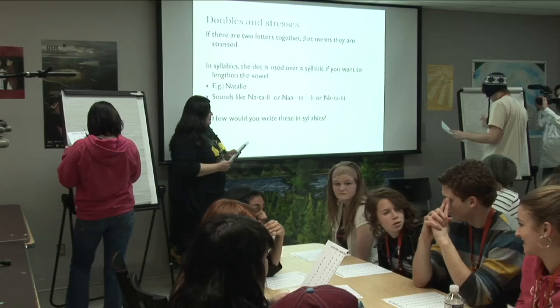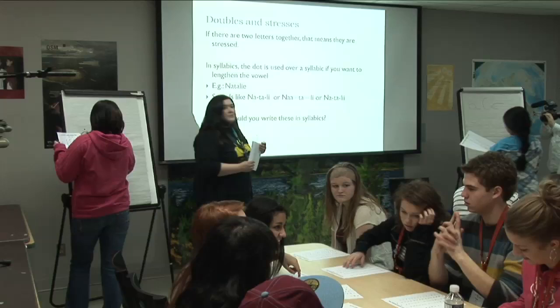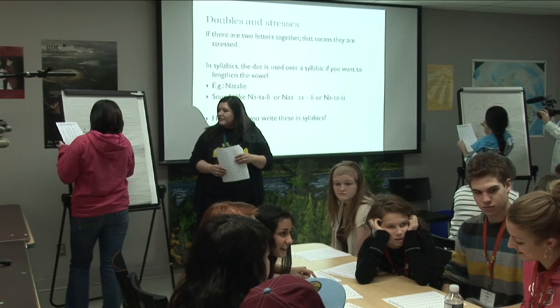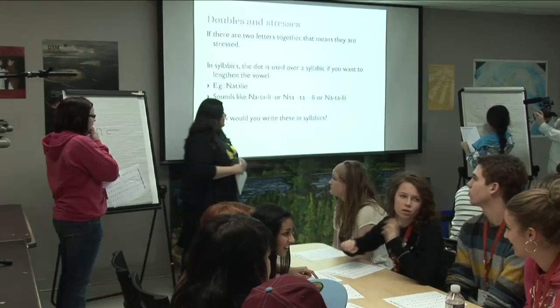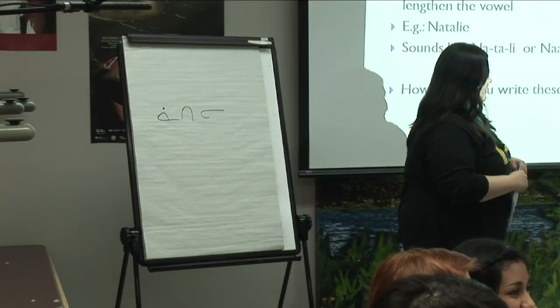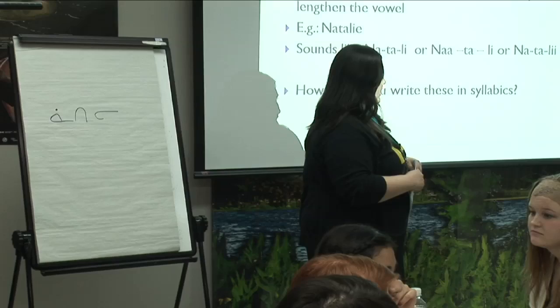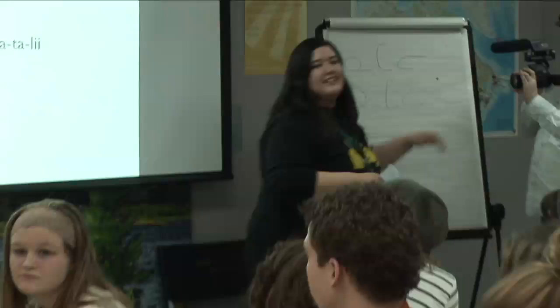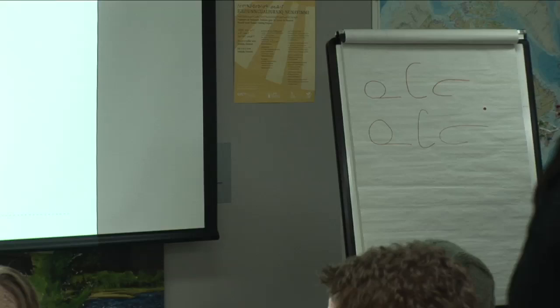That's great. Natalie has a big dot over the Na, so you hold that A sound — Naatalie. Sometimes we put the dot right in the middle, but that works as well. I should tell you, though, sometimes we add the small syllabic for a consonant — remember the row of the smaller ones?